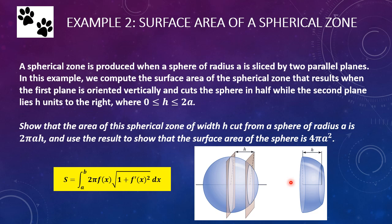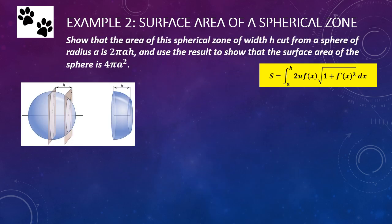This is directly from the text, so if you need to slow down, you can go back and read through the steps. When you don't know what to do, try something. We have a formula for the surface area of a solid of revolution. In that formula, we need two things: the limits on the integration, which is pretty straightforward, and then we also need a function.